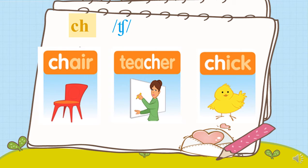Listen and point. K and H say CH. CH, chair. CH, teacher. CH, chick. CH, chick. CH, teacher. CH, chair.